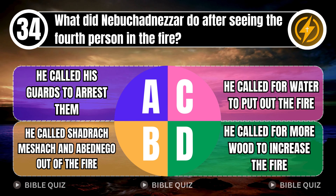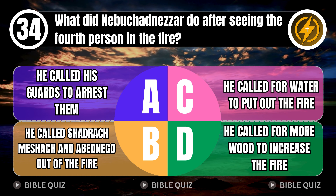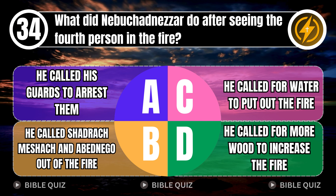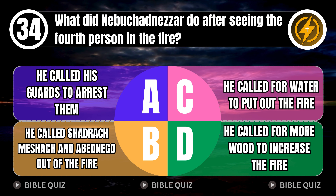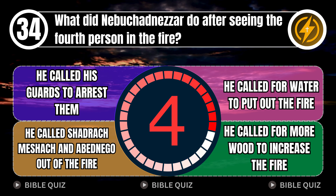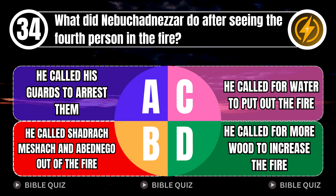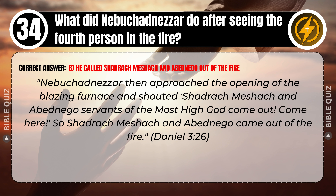Question 34: What did Nebuchadnezzar do after seeing the fourth person in the fire? A. He called his guards to arrest them. B. He called Shadrach, Meshach and Abednego out of the fire. C. He called for water to put out the fire. D. He called for more wood to increase the fire. Correct answer: B. He called Shadrach, Meshach and Abednego out of the fire. Nebuchadnezzar approached the blazing furnace and shouted, 'Shadrach, Meshach and Abednego, servants of the Most High God, come out!' So Shadrach, Meshach and Abednego came out of the fire. Daniel 3 verse 26.